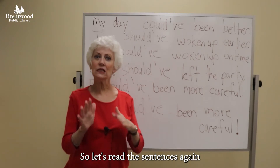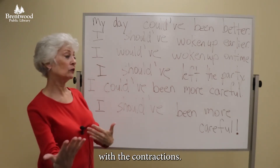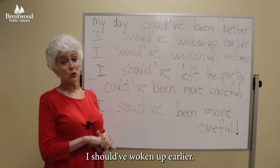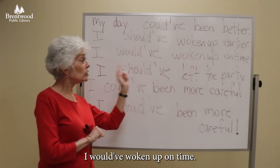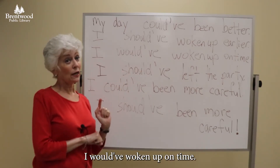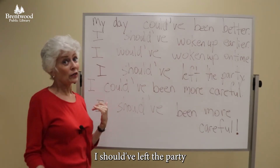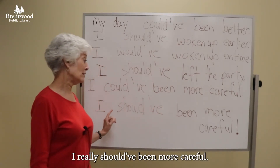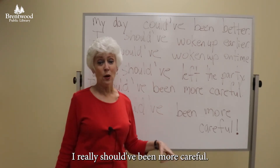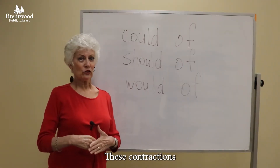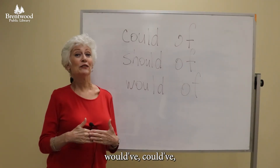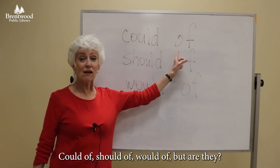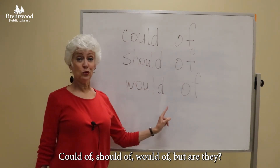So let's read the sentences again with the contractions. My day could've been better. I should've woken up earlier. I would've woken up on time. I should've left the party before 3am. I could've been more careful. I really should've been more careful. These contractions — would've, could've, should've — sound like could of, should of, would of.